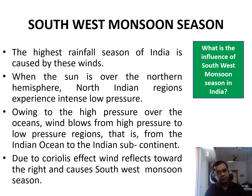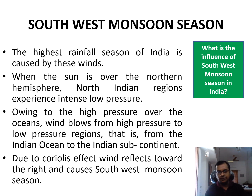Due to the Coriolis effect, the wind deflects towards the right and causes the southwest monsoon season. Hence the wind reflects towards the right, bringing rainfall to the Indian subcontinent.